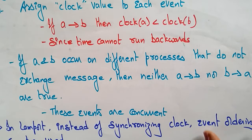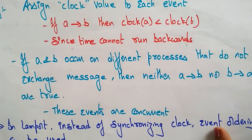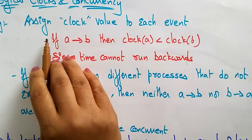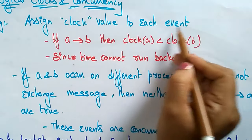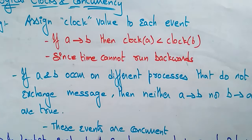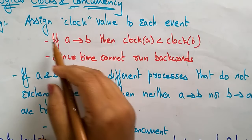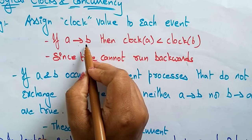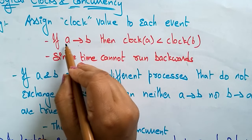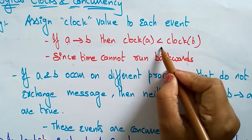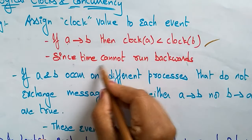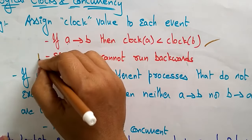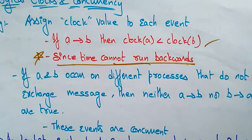Let's see logical clocks and concurrency as they apply in the Lamport algorithm. We have to assign a clock value to each event. So if A Lamport's B — meaning A happened before B — then the clock of A should be less than the clock of B. Since time cannot run backward, remember that in logical clocks the time cannot run backwards.